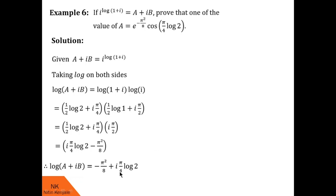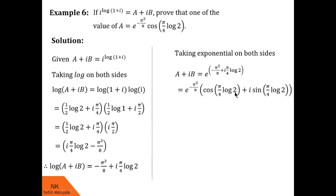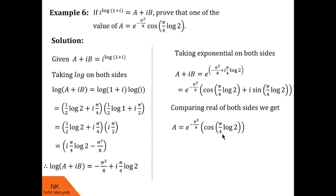This is the value of log(a+ib). Taking exponential on both sides to get a+ib, we get a+ib equals e raised to (minus pi squared by 8 plus i(pi/4)log 2). This is treated as e raised to (x+iy) which equals e^x into e^(iy), and e^(iy) = cos y + i sin y. So RHS becomes e raised to minus pi squared by 8 into (cos(pi/4 log 2) + i sin(pi/4 log 2)). Comparing real parts, a equals e raised to minus pi squared by 8 into cos(pi/4 log 2), as required. Hence proved.